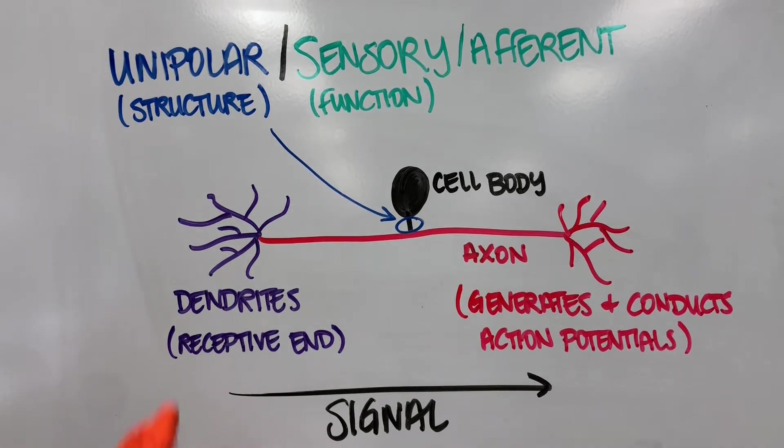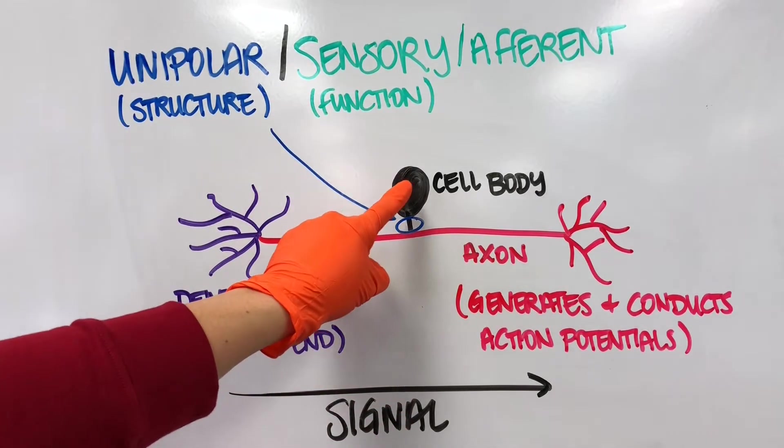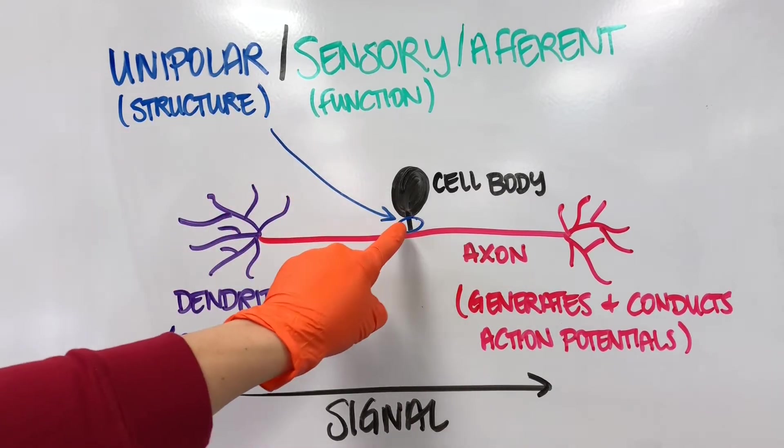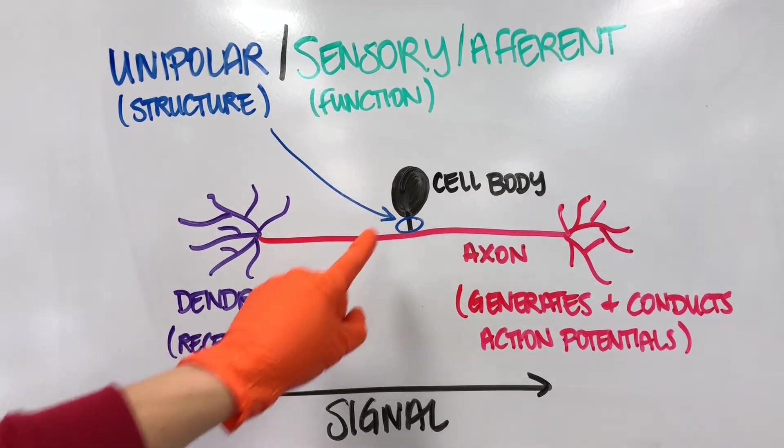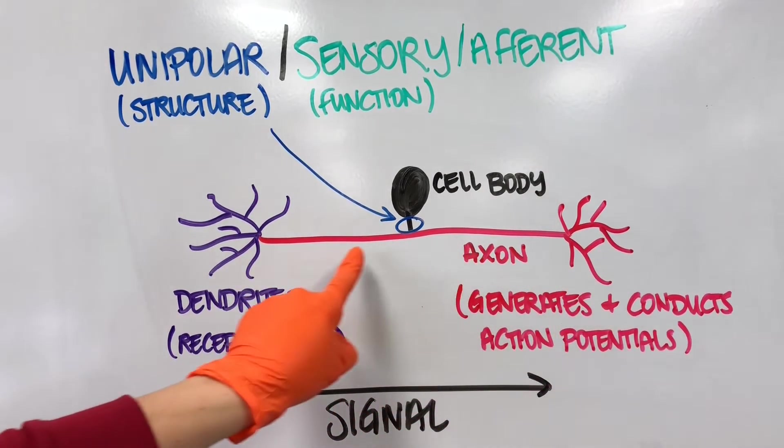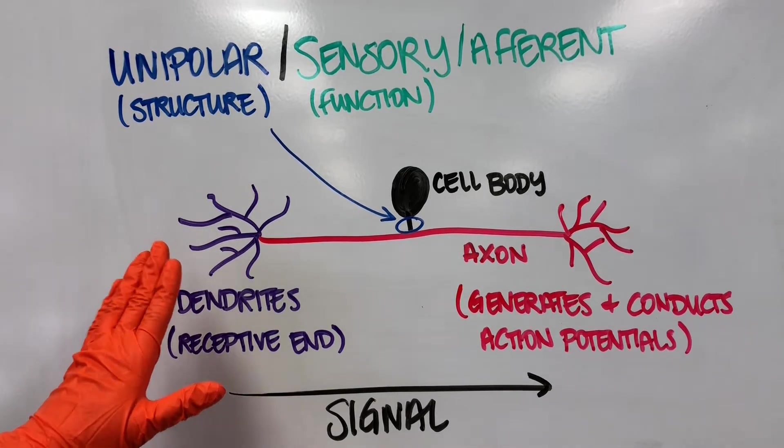Let's review a little bit of the anatomy here. We have the cell body, we have that one process coming off of the cell body, so that's why it's unipolar. This part right here is the axon, and this end over here are the dendrites.